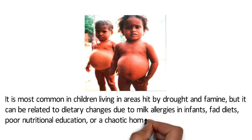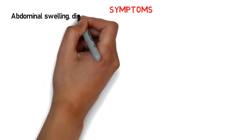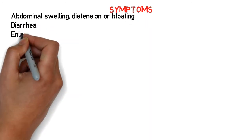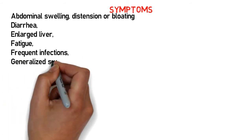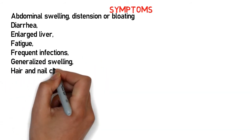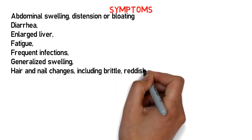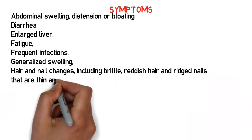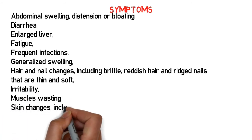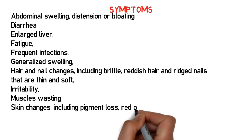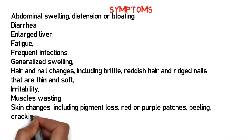Kwashiorkor symptoms may develop slowly over time. Common symptoms include abdominal swelling, distention or bloating, diarrhea, enlarged liver, fatigue, frequent infections, generalized swelling, hair and nail changes including brittle reddish hair and ridged nails that are thin and soft, irritability, and muscle wasting.